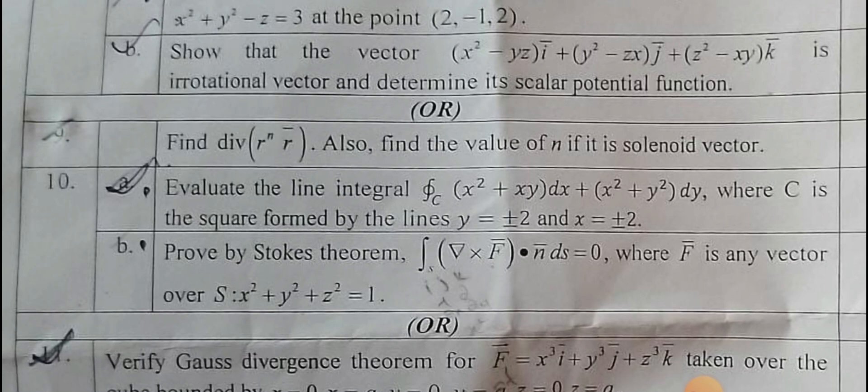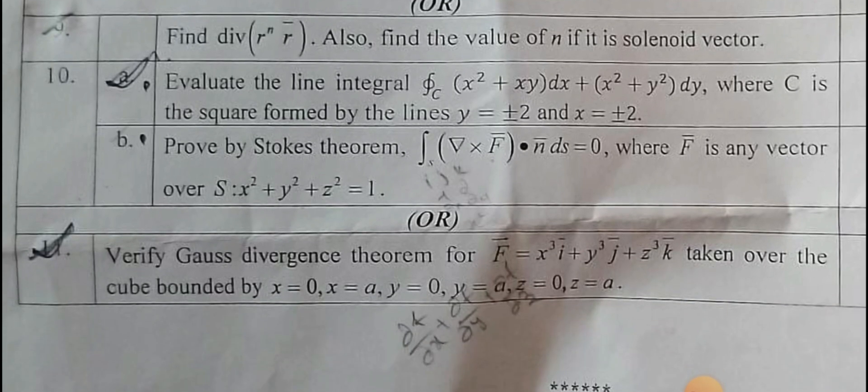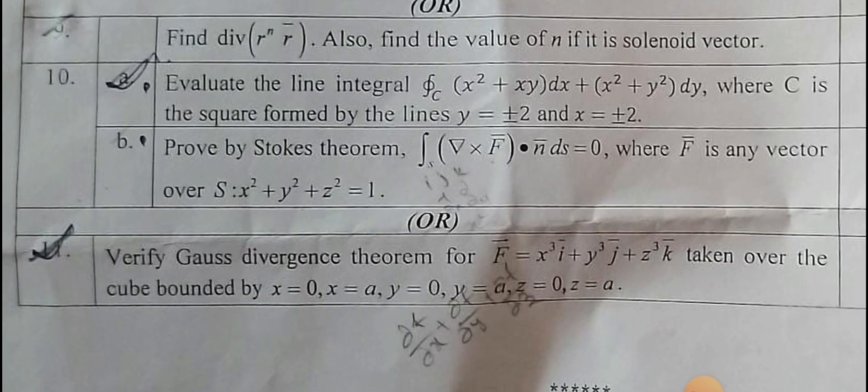Prove by Stokes theorem. It is a direct problem, and you can prove it equals zero. Last problem: verify Gauss divergence theorem for a vector function given over the cube bounded by the given limits. First calculate the right side value, and after simplification, the same answer you'll get on the left side of Gauss divergence theorem.